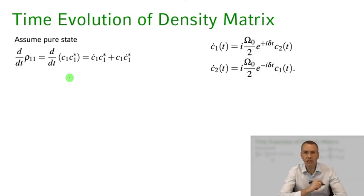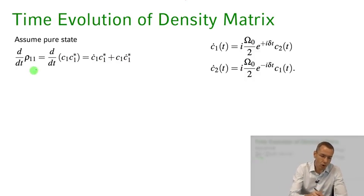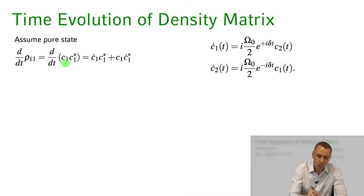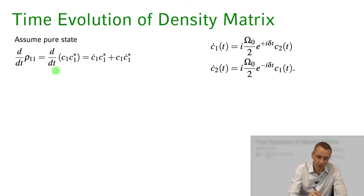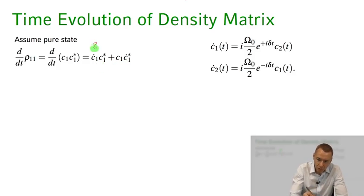Let's say we are in a pure state and we want to calculate the time evolution of the density matrix element ρ₁₁. The rate of change of ρ₁₁ - in a pure state that's just c₁c₁* where c₁ and c₂ are the coefficients in front of the state vectors |1⟩ and |2⟩ describing our pure state |ψ⟩. We take the time derivative using the product rule and get ċ₁c₁* + c₁ċ₁*.